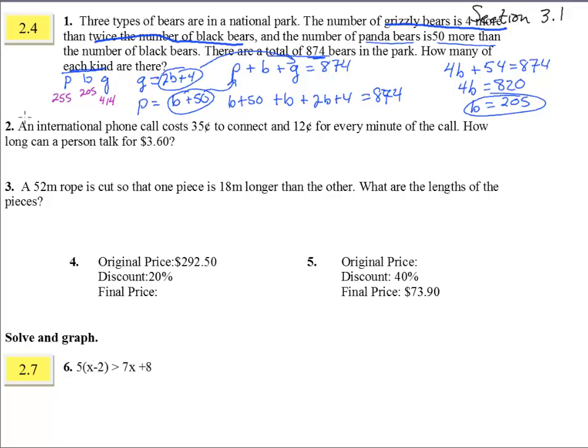All right, number two. An international phone call costs 35 cents to connect. So without any minutes whatsoever, we have 0.35 and 12 cents for every minute. So that is plus 0.12 for every minute. How long can the person talk for $3.60? For exactly $3.60, let's do that.